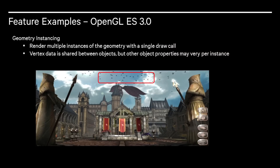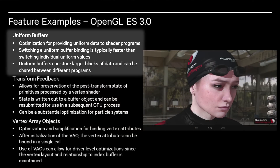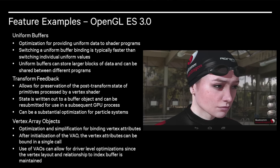Another powerful feature is geometry instancing. With instancing you can render multiple instances of the geometry with a single draw call. Vertex data is shared between objects but other object properties may vary per instance. Instancing is especially important on mobile GPUs where there is typically a high CPU overhead per draw call. GL ES3 also added support for sRGB textures, an optimization for linear lighting pipelines which results in improved contrast while preserving detail in dark areas of the image. Uniform buffers are an optimization for providing uniform data to shader programs. Switching a uniform buffer binding is typically faster than switching an individual uniform value, and uniform buffers can store larger blocks of data that can be shared between different programs, like a matrix transform.